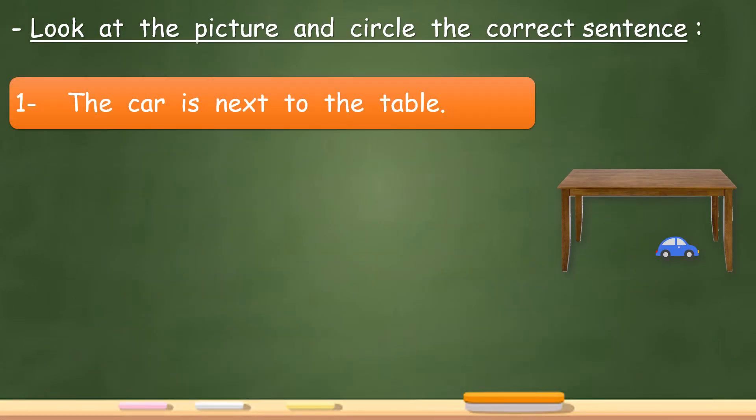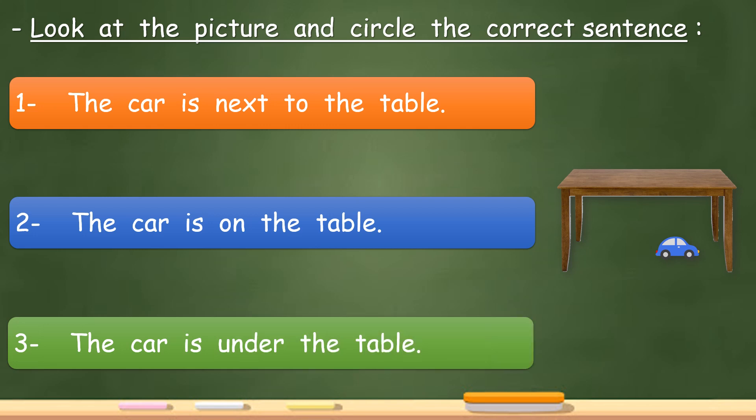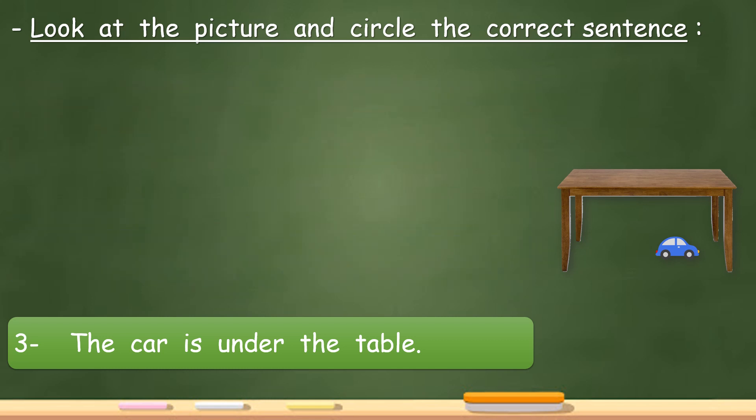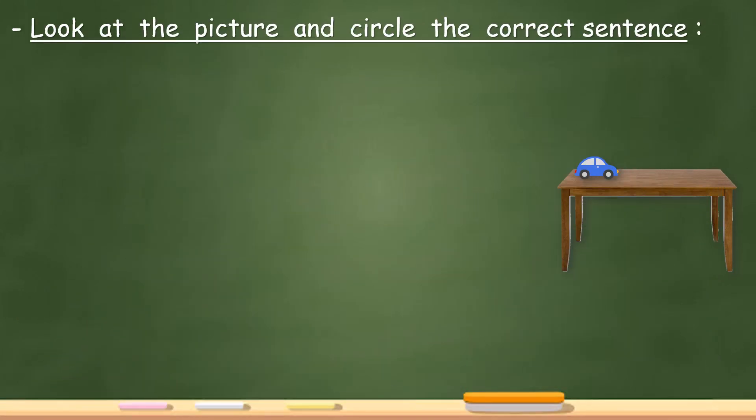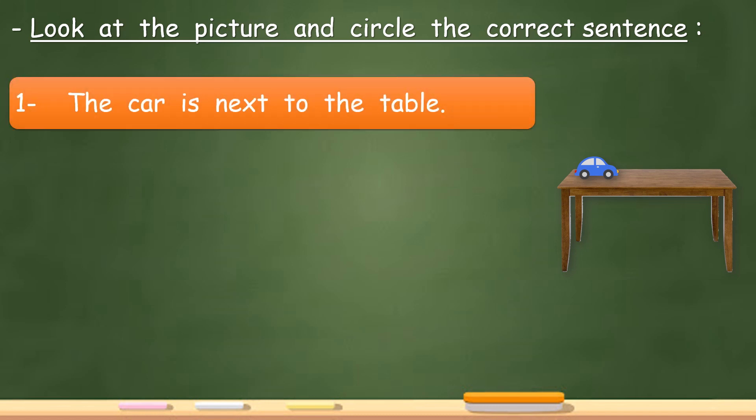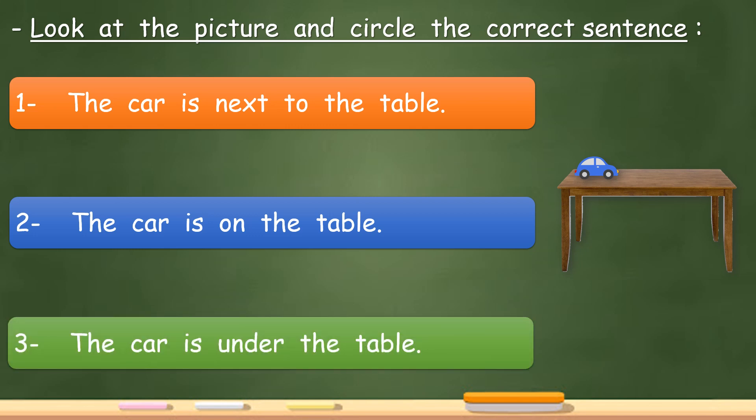The car is next to the table. The car is on the table. The car is under the table. Very good, the car is on the table.